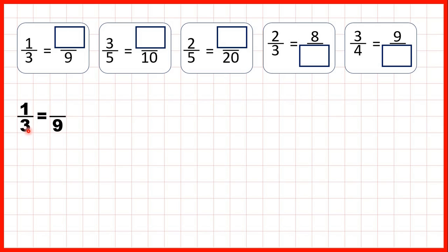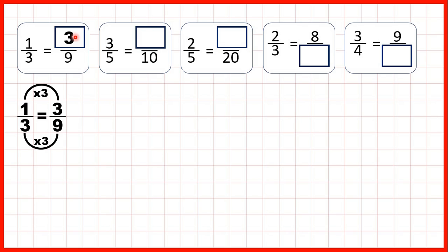Well, nine is in the three times table. Three times three is nine, and when we're finding equivalent fractions, what we do to the denominator we need to do to the numerator as well. One times three is three, so one third is equivalent to three ninths. Three is our missing numerator.